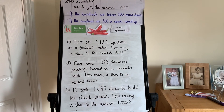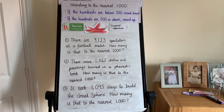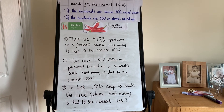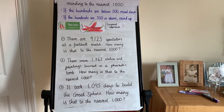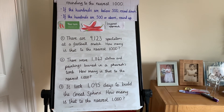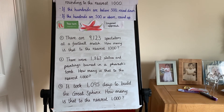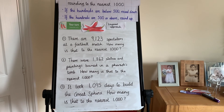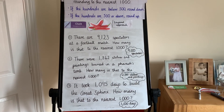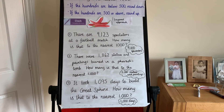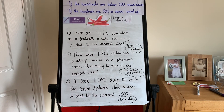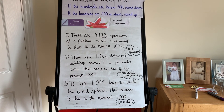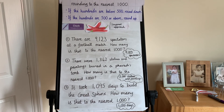Now have a go at chilli 3. There are 9,123 spectators at a football match — how many is that to the nearest 1,000? There were 1,862 statues and paintings buried in a pharaoh's tomb — how many is that to the nearest 1,000? It took 1,095 days to build the Great Sphinx — how many is that to the nearest 1,000? The answers are: 9,000 spectators, 2,000 statues and paintings, and 1,000 days — or you could say roughly 3 years to build the Great Sphinx. That's it for rounding to 1,000.